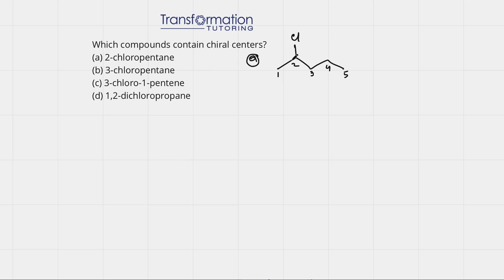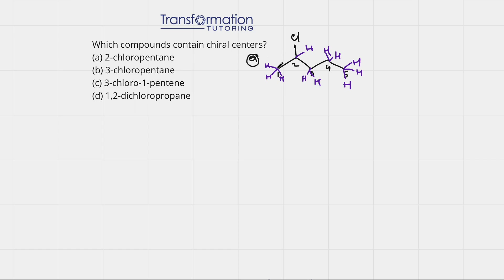Does this molecule have any chiral centers? First we can go ahead and show hydrogens — every carbon wants to have four bonds. So if a carbon has one bond and wants four, that means three hydrogens are not shown. I'm going to show hydrogens in purple. This carbon will have three hydrogens. This carbon has three bonds and wants four, so it needs one hydrogen. The next one has two hydrogens, the next has two hydrogens, and the last has three hydrogens. Carbons that have two or three hydrogens cannot be chiral centers because they don't have four different groups — having two or three hydrogens means they have two or three identical groups.